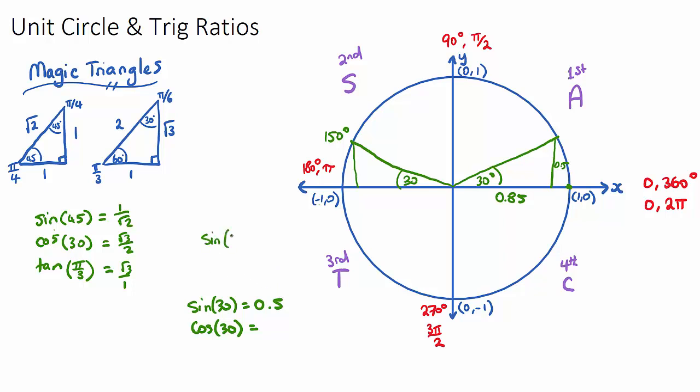But if I did sine of 210, which is down here, notice that I will have the same value of the height, 0.5, but now it's negative because it's going down. So sine of 210 is negative a half or negative 0.5.